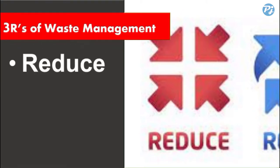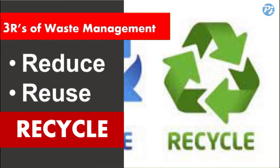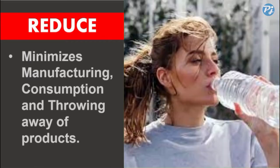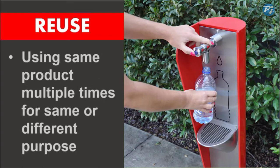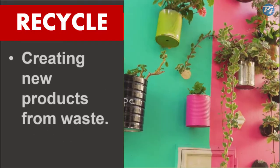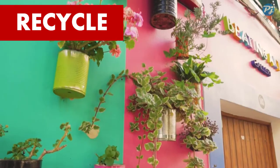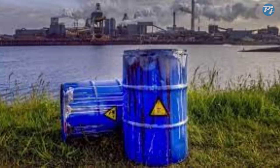The three R's are Reduce, Reuse, and — you're right — Recycle. Reducing means minimizing the manufacturing, consumption, and throwing away of products. Reuse means using the same product multiple times for the same or different purpose. Recycling means creating a new product from waste.